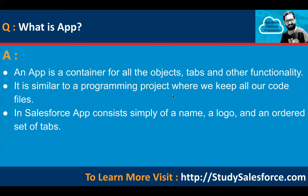What is an app? An app is a container for all the objects, tabs, and other functionality. It is similar to a programming project where we keep all our code files. In Salesforce, an app consists simply of a name, a logo, and an ordered set of tabs. Apps can also be of two types: some apps are provided by Salesforce by default, those are called standard applications; if you create new applications, those are known as custom apps.